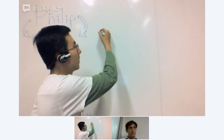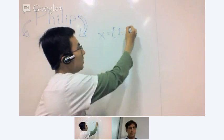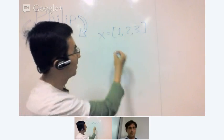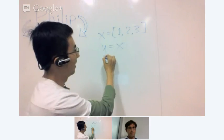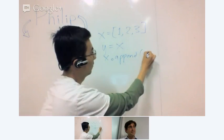So an example here is you write code like, you know, x equals 1, 2, 3. So x is a Python list, and then y equals x, and then x.append(4).